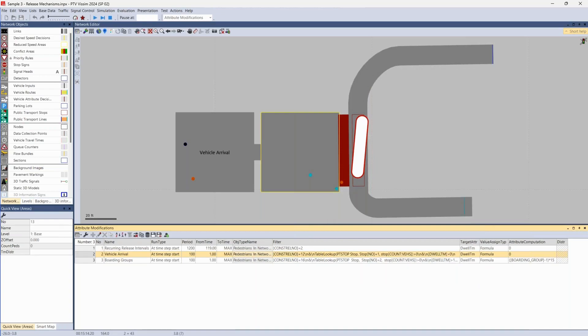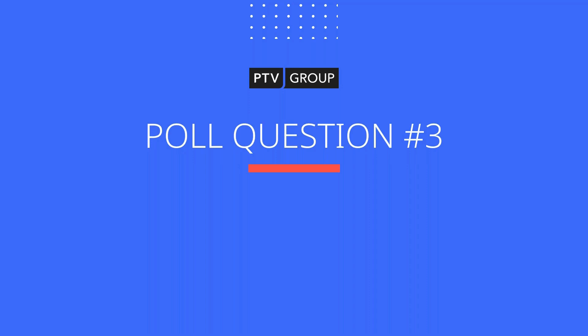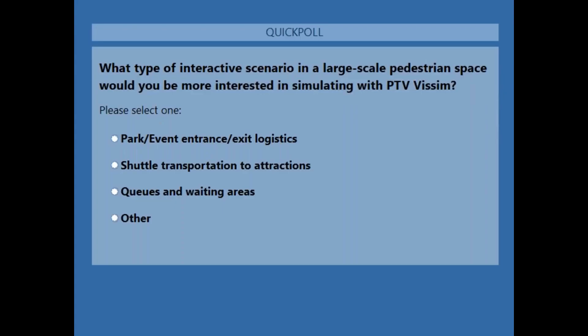We can see that trigger working based on vehicle arrivals. For a quick break, here's a third poll question: What type of interactive scenario in a large-scale pedestrian space would you be most interested in simulating? Options include parks, event entrances and exiting logistics, shuttle transportation to attractions, and queuing or other waiting areas.